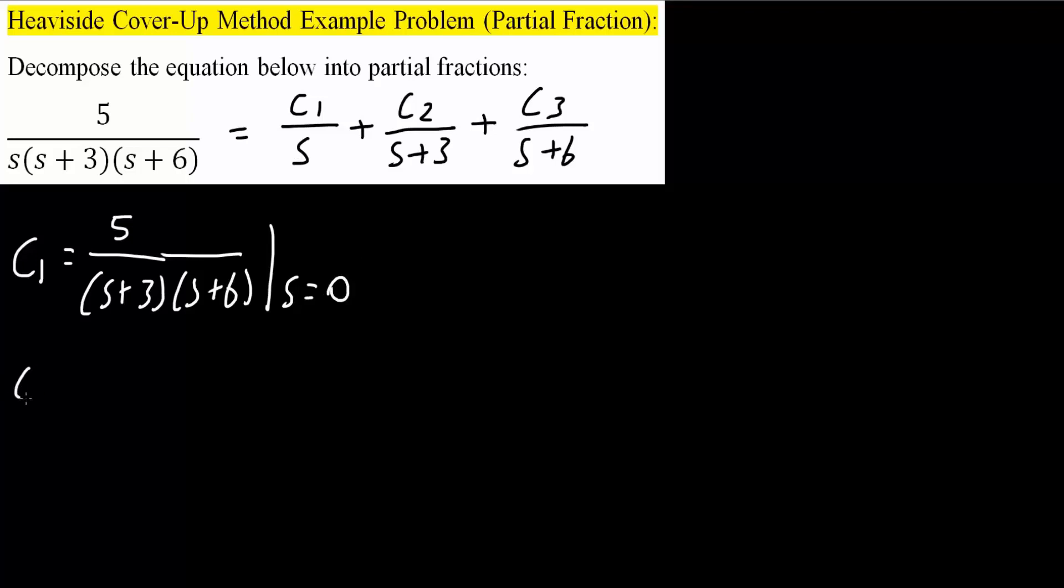Likewise we'll do c2. So c2 will equal, we keep the numerator, so five divided by everything besides the one c2 is on top of. So it would be s and s plus six. And here we're going to input the value here, and we would say that s is equal to negative three. We want this piece here, the denominator piece of this, to be zero. So negative three plus three is zero.